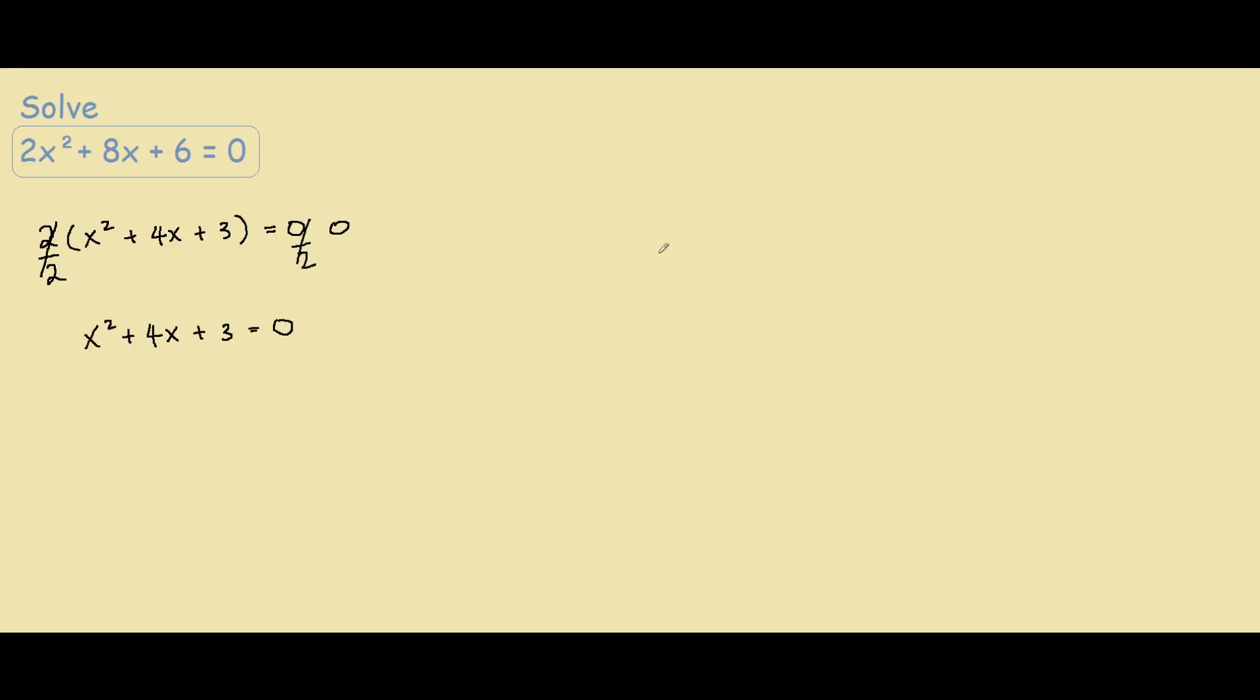Our next step is to look at this equation and see if it can be factored. So what we do is look at the number 3 and we want to see if any of the factors of 3 can add up to 4. So right now we have 3 and the only combination is 3 times 1.